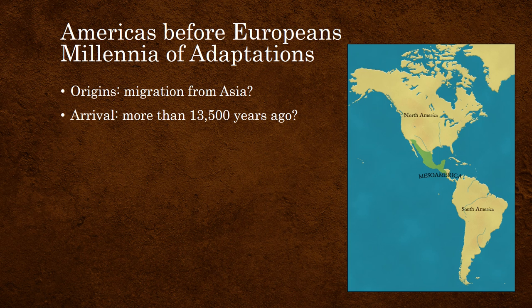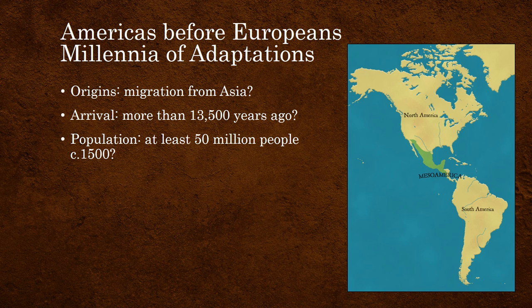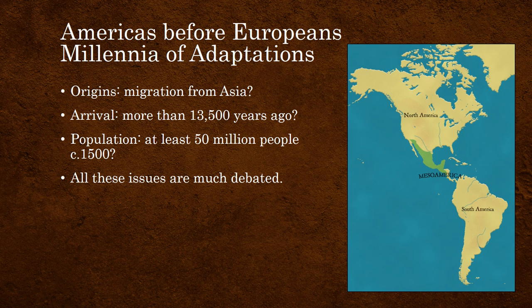Some scientists have even theorized it could be as early as 20,000 years ago. The population at first contact is estimated to be at least 50 million souls across both continents, but this is probably an underestimate. There was no census taking at that time, so it's very difficult to know exactly how many people lived there, but it was certainly at least 50 million people. All of these issues continue to be much debated, and there will be new discoveries in the future, so stay tuned.